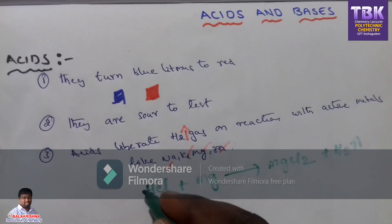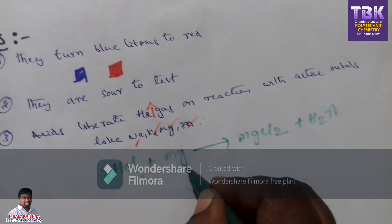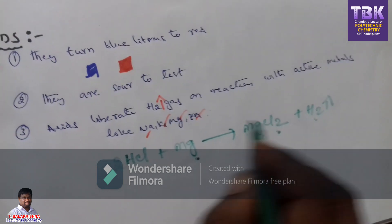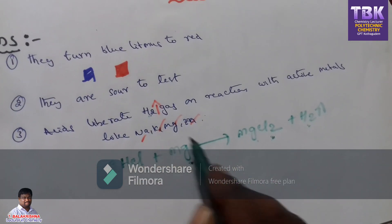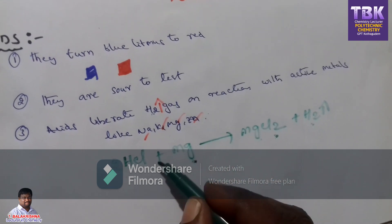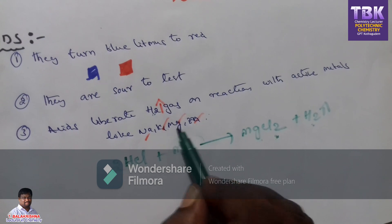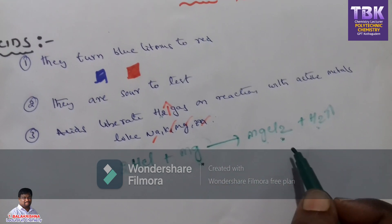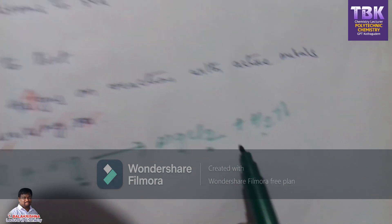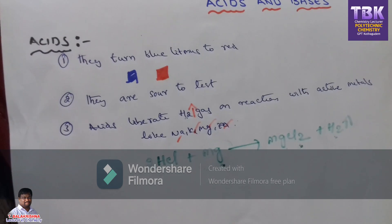When you balance the equation, 2 moles of HCl react with 1 mole of magnesium metal, it produces MgCl₂ plus H₂. Active metals react with acids and H₂ gas is produced. That is the third point.